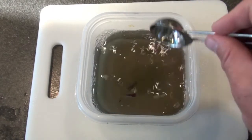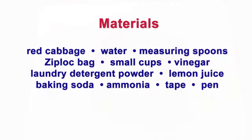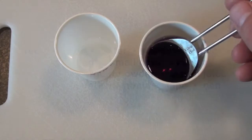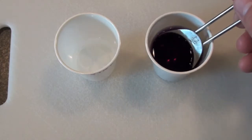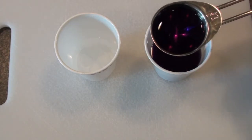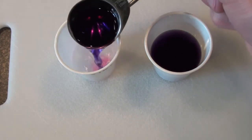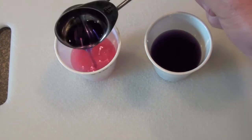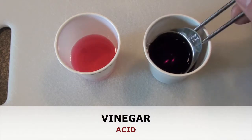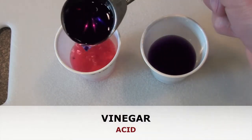You can investigate acids and bases yourself with these materials. Let's get started with vinegar. When cabbage indicator is added to vinegar the color changes from purple to pink. This indicates that vinegar is an acid.